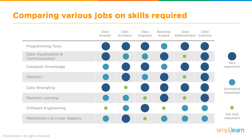Now let's talk about the skills required for each job role. A data analyst needs a sound knowledge in programming tools, data visualization and communication, and data wrangling. A data architect needs to know programming tools, database knowledge, statistics, mathematics, and linear algebra. A data engineer must be good with programming tools, database knowledge, data wrangling, and software engineering. A business analyst needs to be good at data visualization and communication, statistics, data wrangling, and machine learning. A data administrator needs to be good with programming tools, database knowledge, and data wrangling.